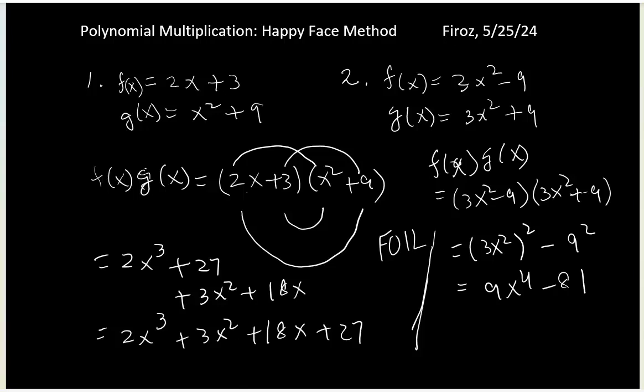But of course you can use the happy face method again. 3x² times 3x² gives you 9x⁴—I'm showing you another way. Then negative 9 times positive 9 gives negative 81. Coming from the inside, 3x² times 9 gives 27x², and negative 9 times 3x² also gives 27x². These cancel, so you get the same answer.